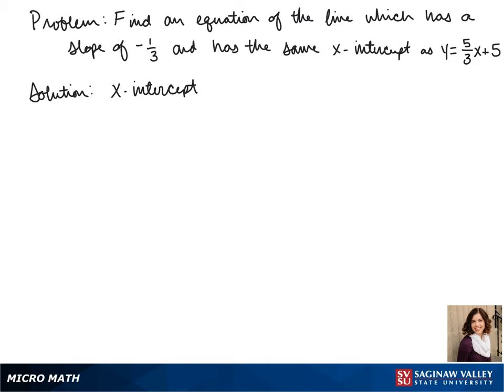First we'll be finding our x-intercept. We know that in an x-intercept our y-value is zero. So we can look at our equation for the line that has the same x-intercept and plug in a zero for y.